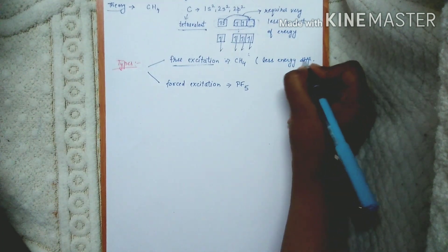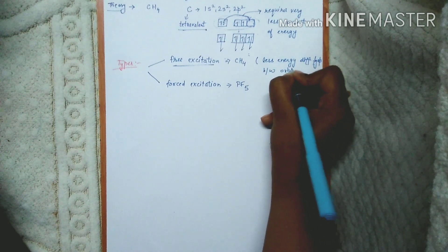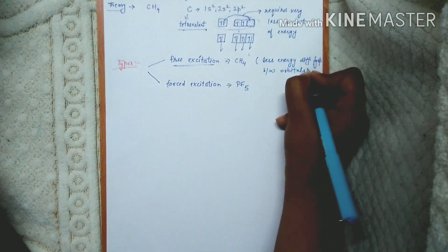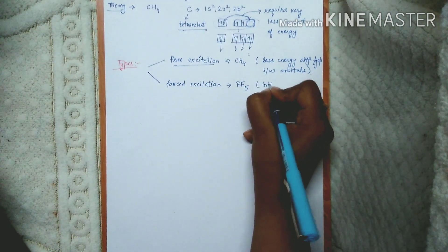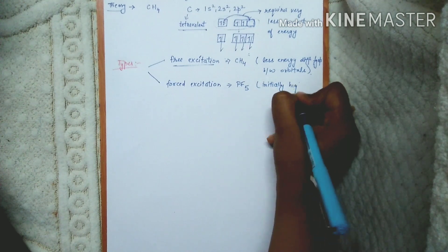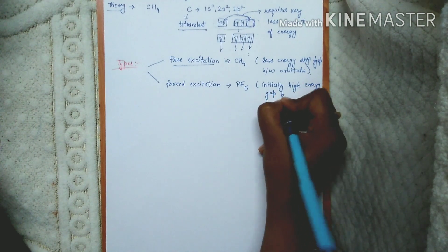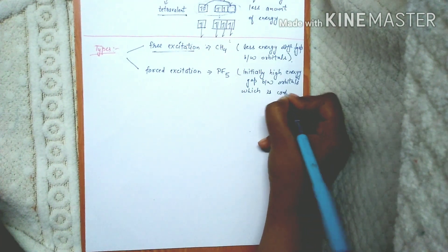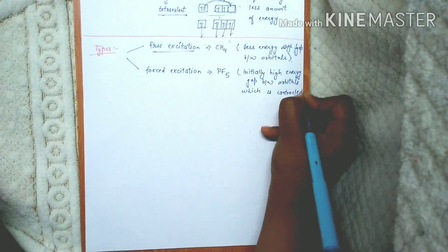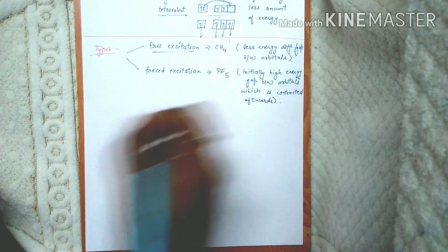In the case of free excitation, as I've told you, there is a requirement of less energy - that is, there is less energy difference between the orbitals. In the case of forced excitation, the energy gap between orbitals is initially high, which is then contracted afterwards.